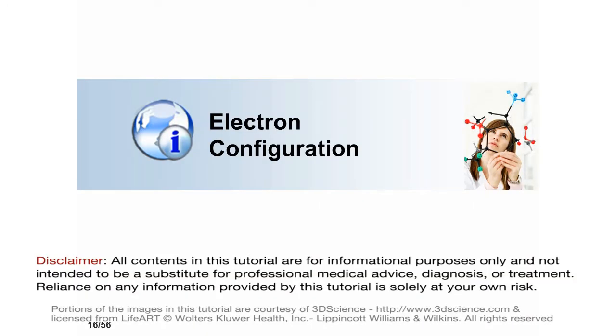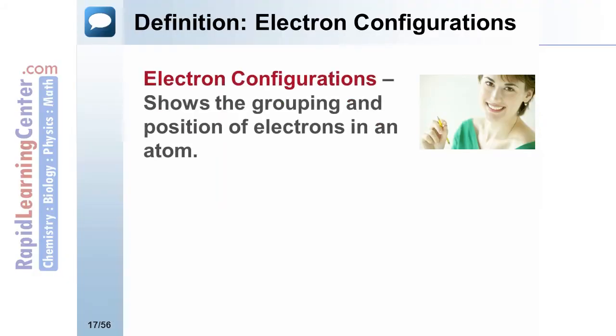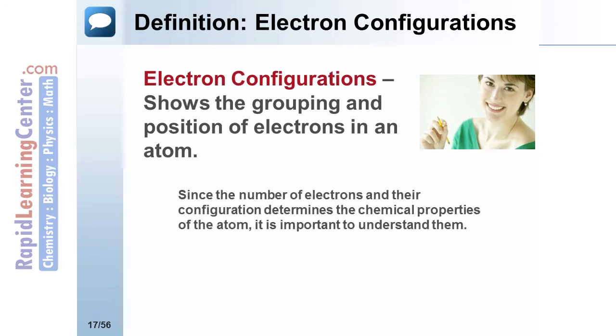How are electron configurations shown? An electron configuration shows the placement of electrons in an atom. The number and configuration of electrons determine the chemistry of the atom and are therefore important to understand.